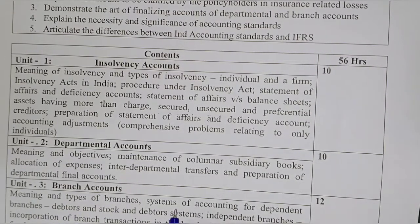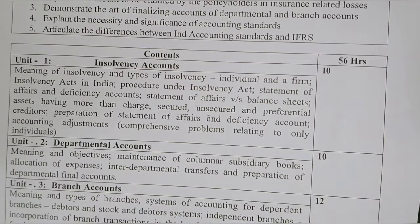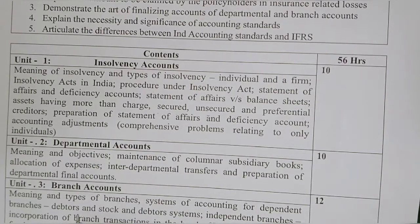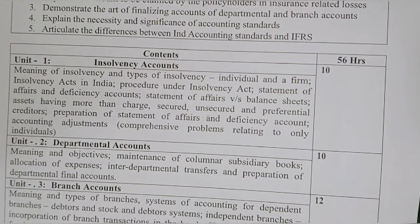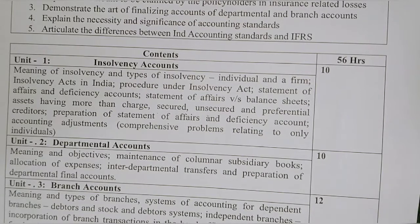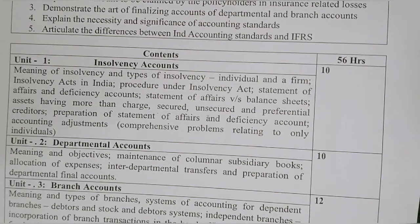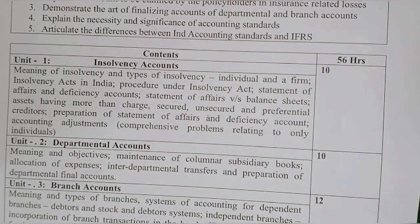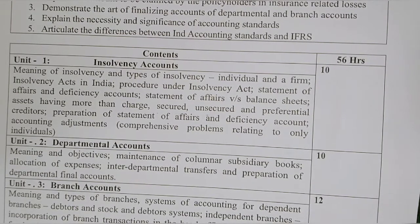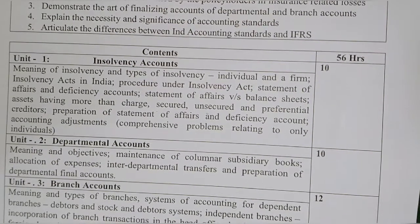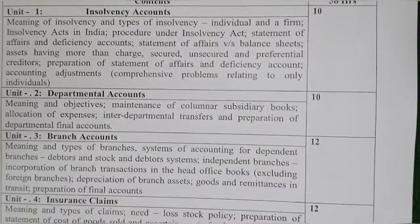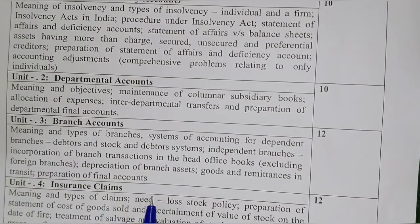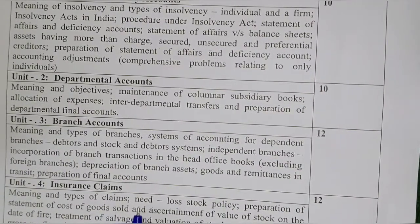Unit number three is Branch Accounts, covering the meaning and types of branches, systems of accounting for different branches, debtors and stock systems, independent branches, incorporation of branch transactions in the head office books (excluding foreign branches), depreciation of branch assets, goods and remittances in transit, and preparation of final accounts.